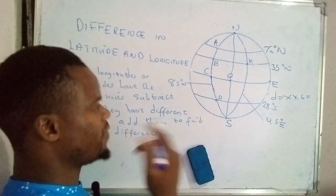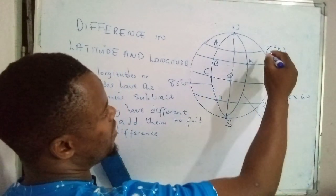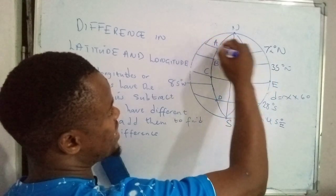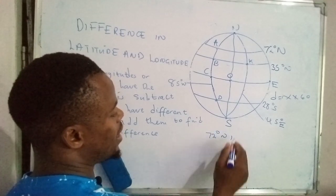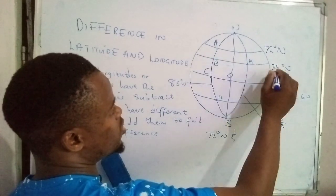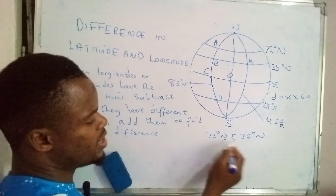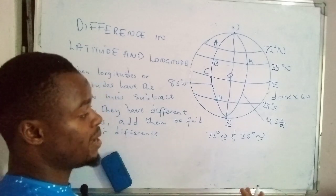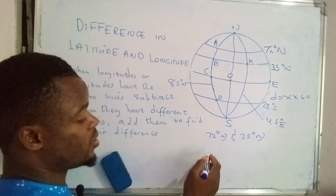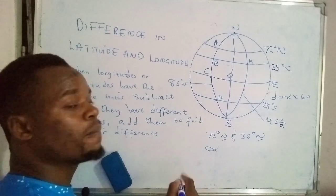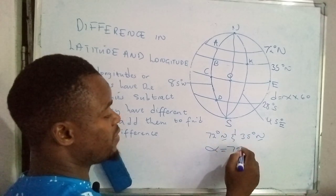Now let's learn how to find the difference between these lines. Say we need to find the difference between 72 degrees north and 35 degrees north — both are latitudes in the northern region. If you check the units, they are the same — both are in the northern hemisphere. The difference, denoted by that symbol, is found by subtracting when they have the same units.